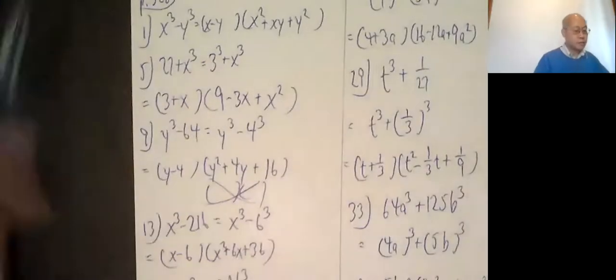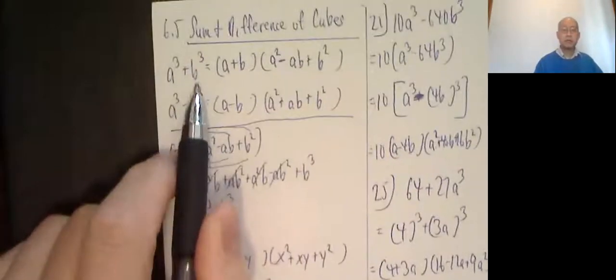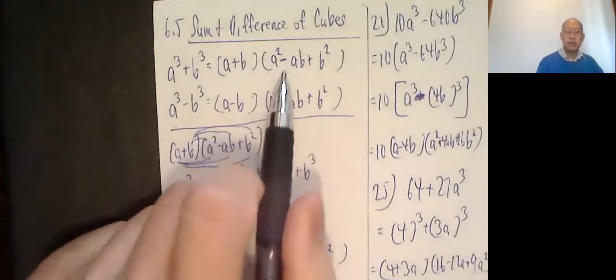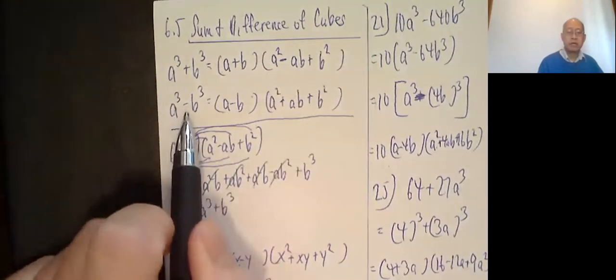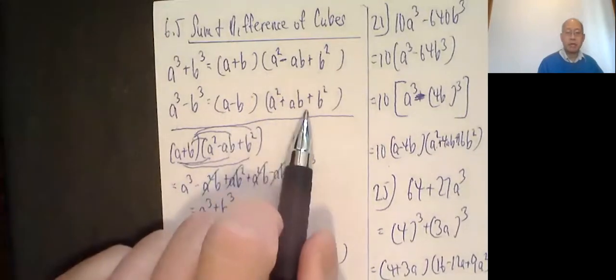So today we're doing sum and difference of cubes and our formulas for each. So a cubed plus b cubed, sum and difference of cubes. a plus b, a squared minus ab plus b squared. a cubed minus b cubed, a minus b, a squared plus ab plus b squared.